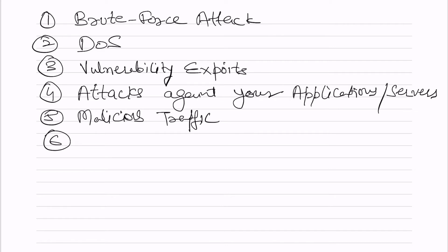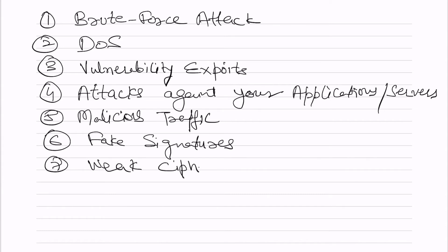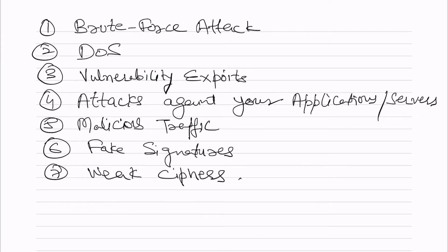IDS identifies fake signatures of certain traffic, because many attacker tools carry fake signatures or use weak ciphers. If you have IPS in place, IPS will be able to block those IPs generating these kinds of attacks. IPS also has the ability to inform the security administration team about the attack.